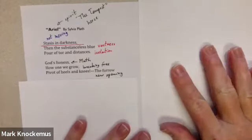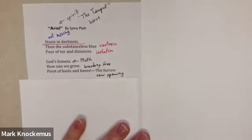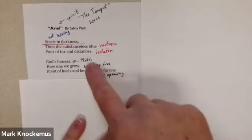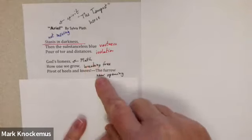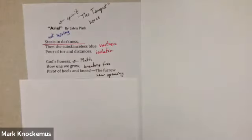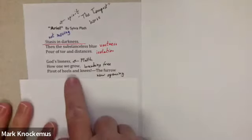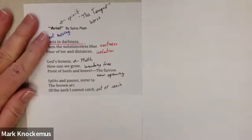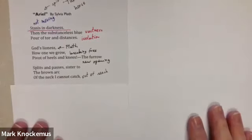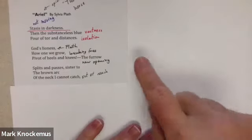Now God's lioness, that's Plath, that's her. How one we grow, pivot of heels and knees. So we have this speaker identifying herself as God's lioness, and we have growth, we have breaking free, pivot of heels. Women wear heels and knees. We have the furrow, so we have a new opening here, this idea of movement. We're moving here.